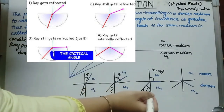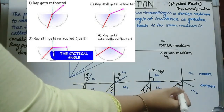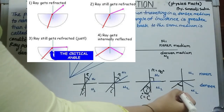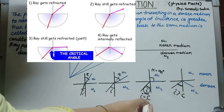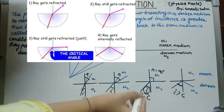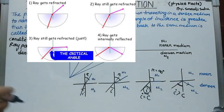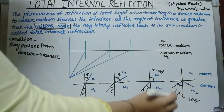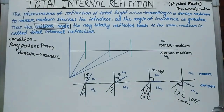Now, if we further increase the angle of incidence beyond the critical angle, the ray is totally reflected back to the same medium — totally reflected. That means 100% of the ray is reflected back to the same medium. This phenomenon is called total internal reflection.